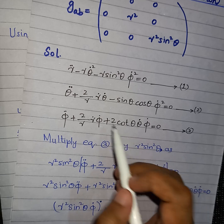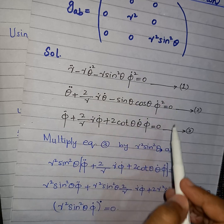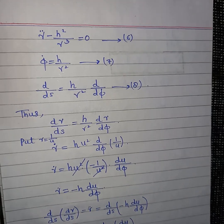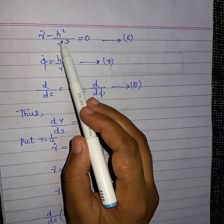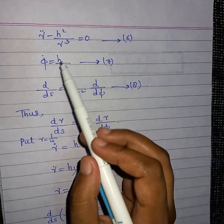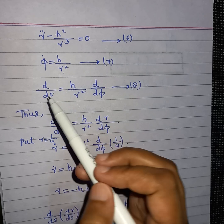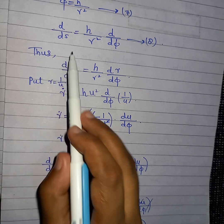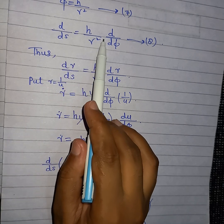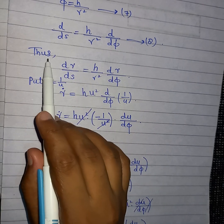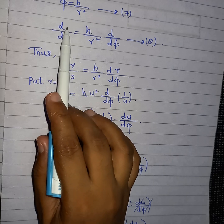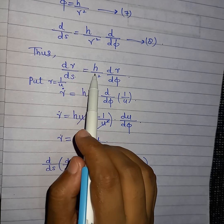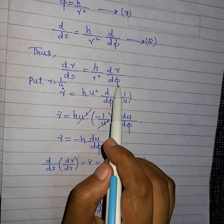We can now put θ = π/2 into all three equations — equation number 1, 2, and 3. Substituting gives: r̈ − h²/r³ = 0, and the remaining two equations as shown. Also, d/dS = (h/r²) d/dφ. Substituting r gives ṙ = dr/dS = (h/r²) dr/dφ.